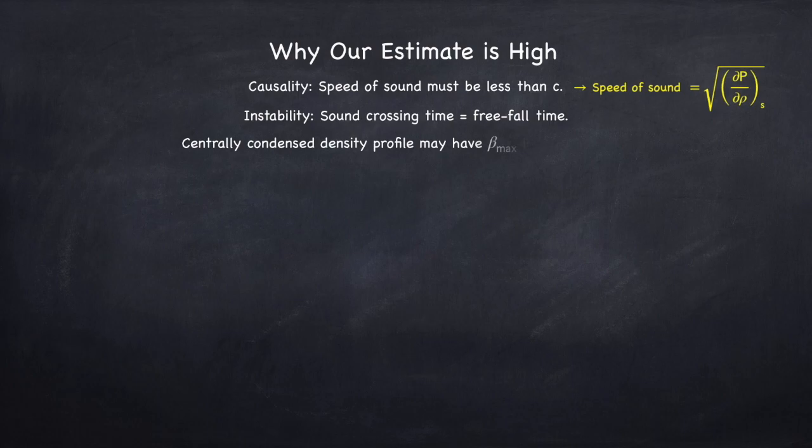And finally we assumed constant density, which is not a bad approximation for a neutron star, but in reality the density will decrease with radius. And when the density is centrally condensed, it's possible that the maximum beta will occur somewhere inside the star, not at the surface of the star. So if that happens, beta will reach eight ninths somewhere inside the star, prior to it being eight ninths at its surface. It doesn't matter where beta equals eight ninths, as long as beta equals eight ninths somewhere, it will collapse.